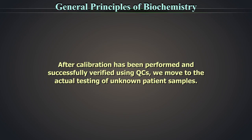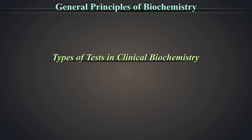After calibration has been performed and successfully verified using QCs, we move to the actual testing of unknown patient samples. There are three main kinds of tests we generally do on these analyzers: endpoint tests, rate or fixed time tests, and kinetic tests. We will discuss one test of each kind in this tutorial. We will take up the principle of each as we get there.